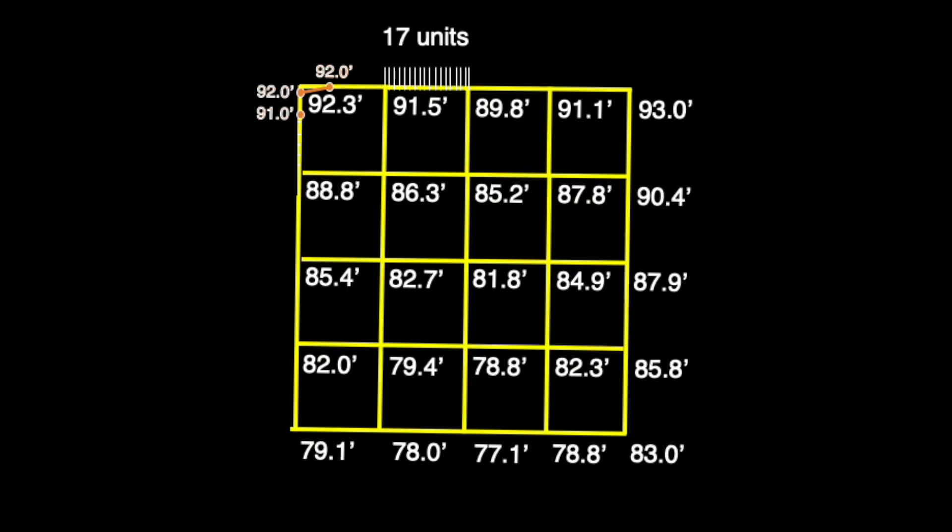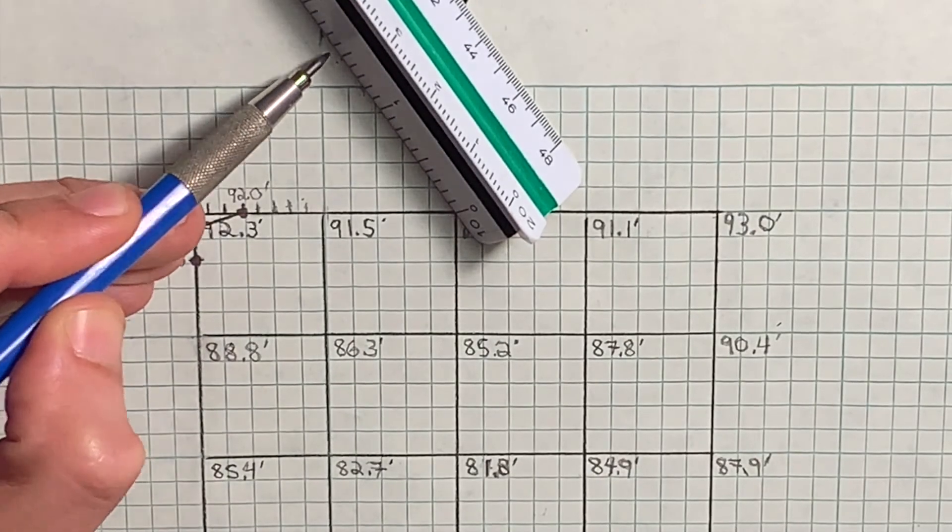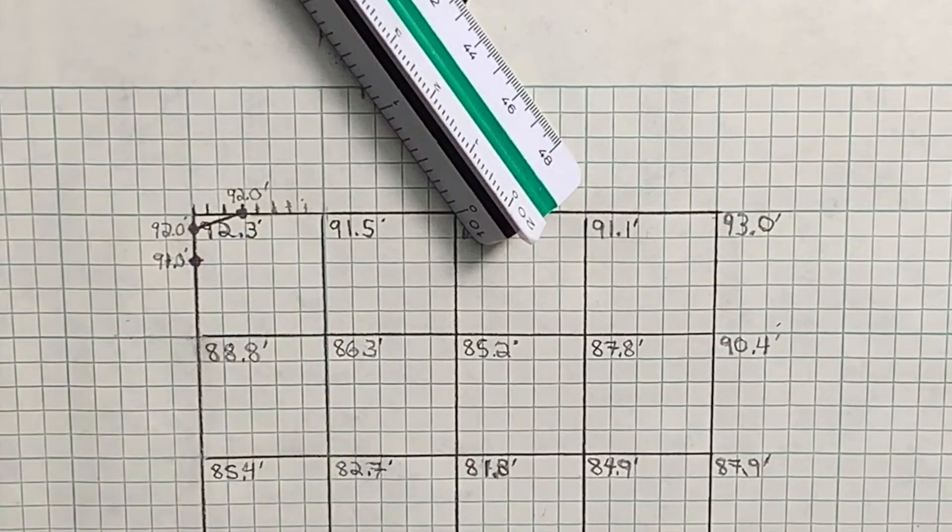Starting with the closest elevation to our desired contour point of 91 feet, we subtract that 91 feet from the elevation of 91.5 feet. With 0.5 feet remaining, we move our decimal point over one place to the right and discover that five units over from 91.5 feet rests our contour point of 91 feet.